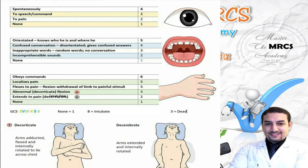It's hard to remember the GCS, so let's use a trick. If there is no response at all, give one for each score — that's three. From the normal side, if the patient is normal, they score 15. Normal eye opening is spontaneous; verbal response is oriented; motor response is obeying commands. As the patient deteriorates, they won't open eyes until spoken to, then only to pain, then not at all.